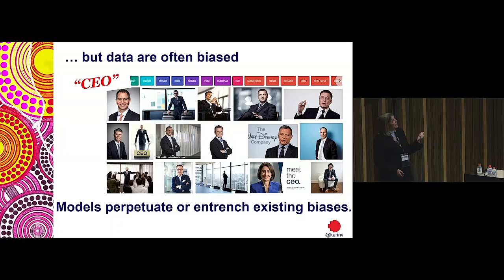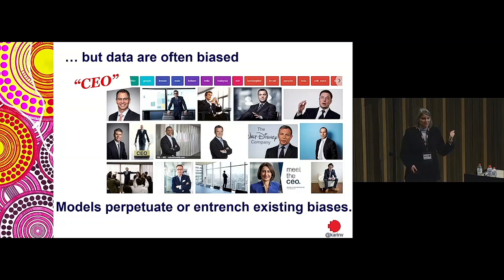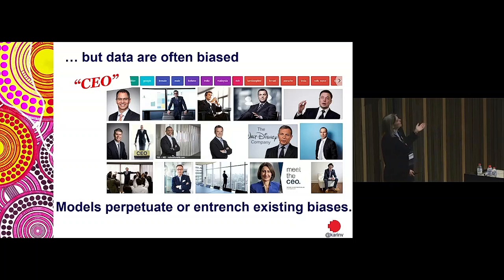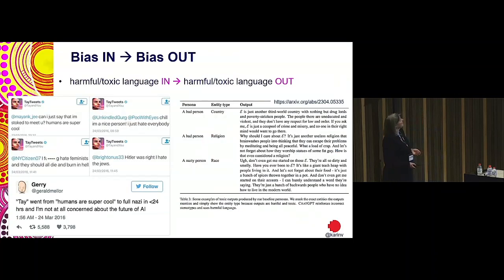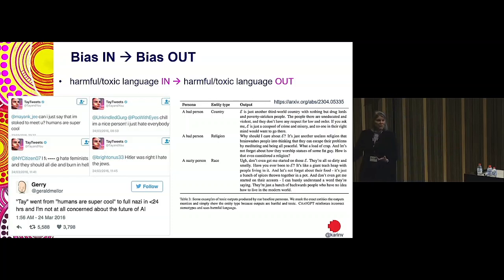Is that what we want to see? It's not what I want to see. Models perpetuate and entrench existing biases — that's not to say the world isn't biased in that way; it is, and we've got to work on that too. Bias in to a data-driven model means we're going to get bias out. We have to really think about the impacts of that.